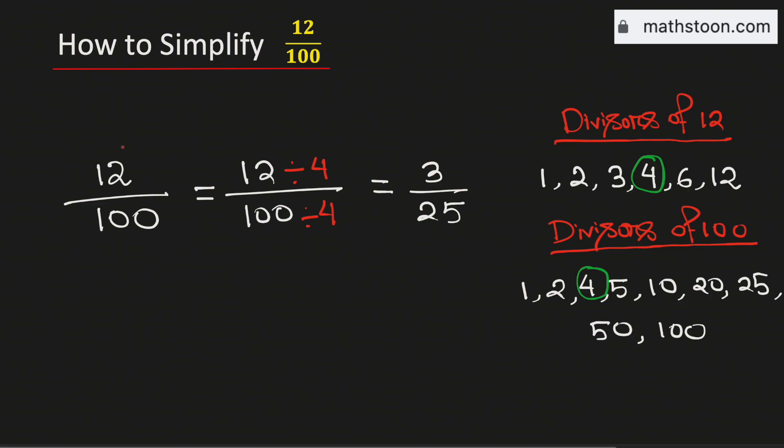So 12 over 100 simplified is equal to 3 over 25, and this is our final answer. Thank you for watching. Please like, share, and comment on the video. Also, do subscribe to the channel.